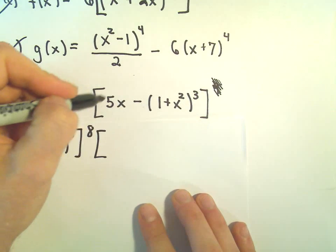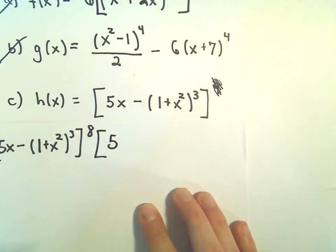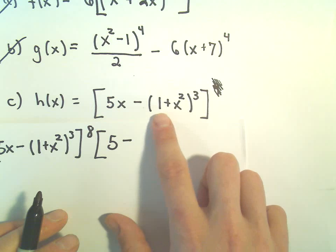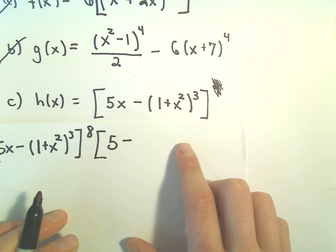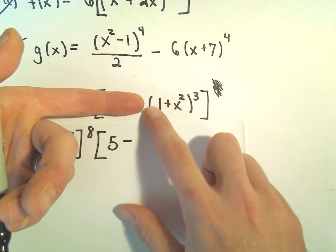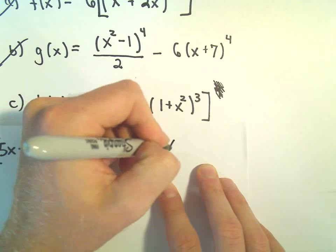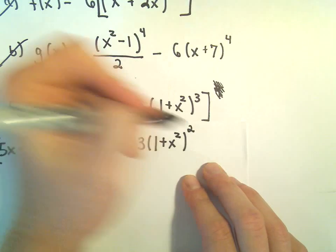Then I have to take the derivative of 5x. The derivative of 5x is just going to give us 5 minus, and then I have to take the derivative of 1 plus x squared cubed. On this part, we're going to actually have to use the chain rule again. The 3 will come out front. So we'll have 3 times 1 plus x squared. We'll take 1 away from the exponent, which will give us 2.